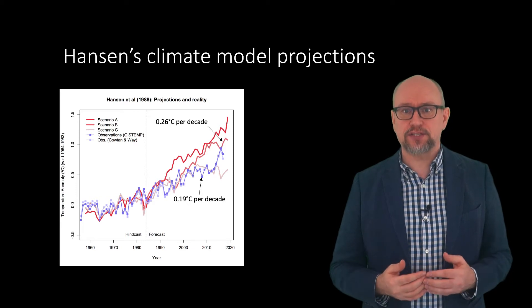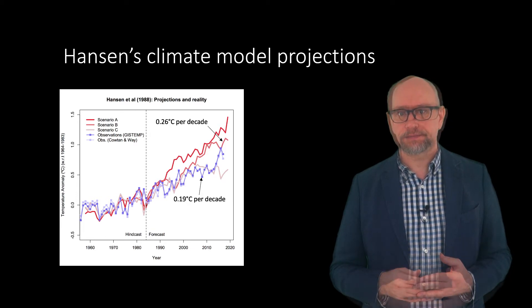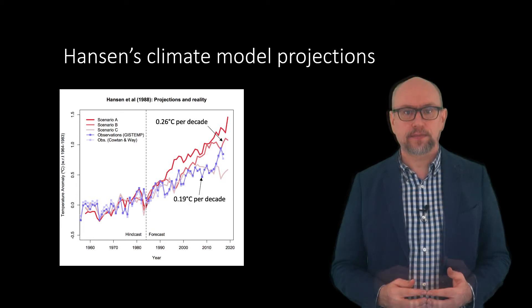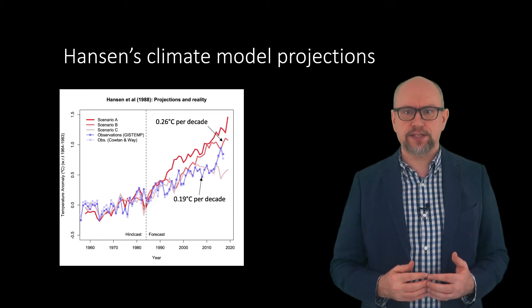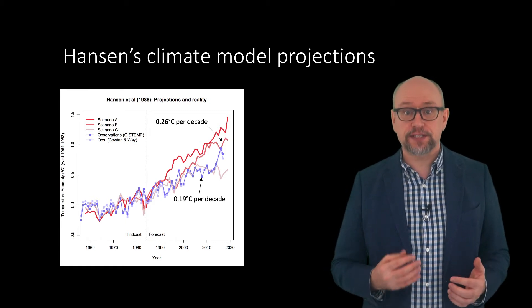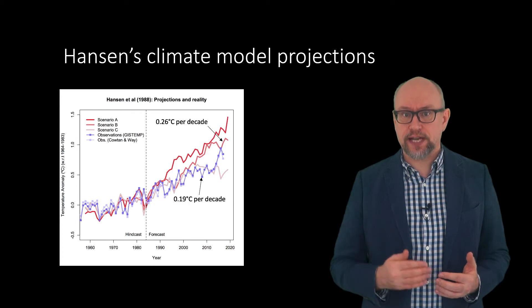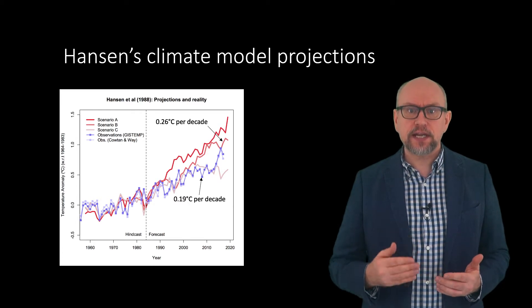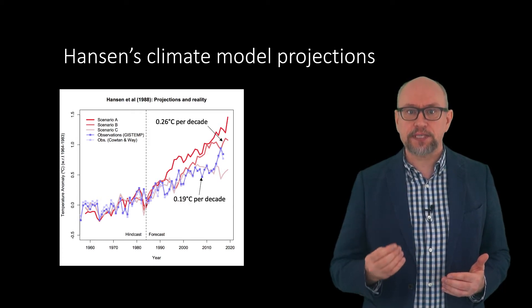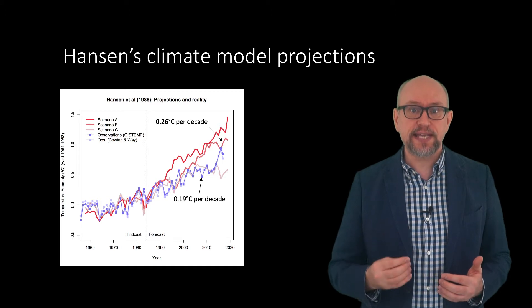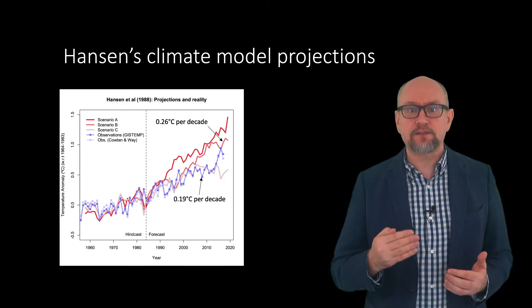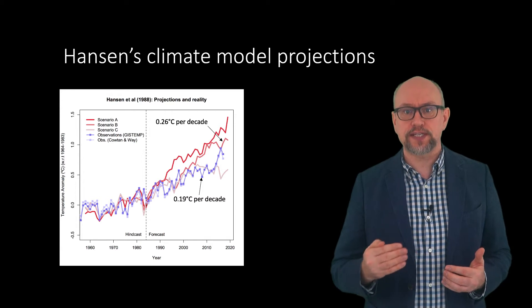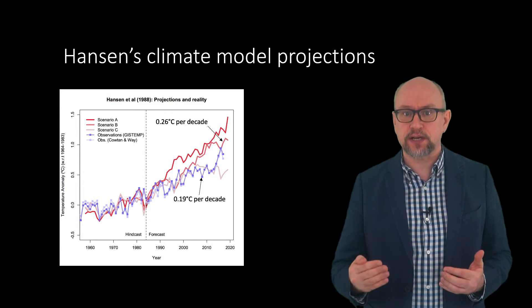Does this mean that Hansen's work was wrong? Well, there are two main reasons for Hansen's overestimate. First, Scenario B, which was closest to reality, slightly overestimated how much atmospheric greenhouse gases would increase. And second, Hansen's model had a rather high climate sensitivity of about 4.2 degrees Celsius for a doubling of atmospheric CO2.